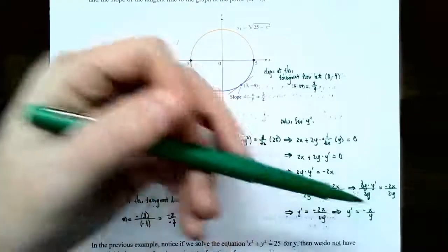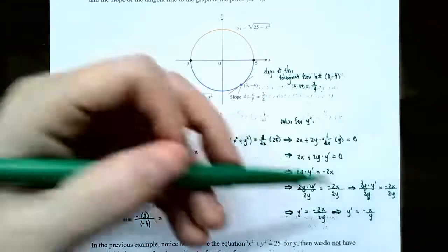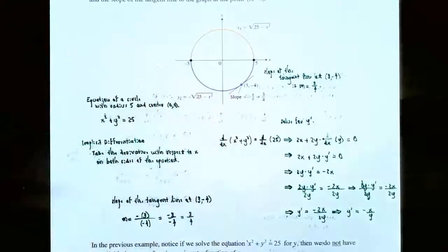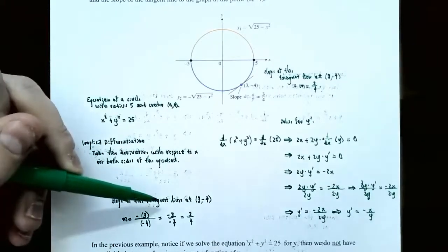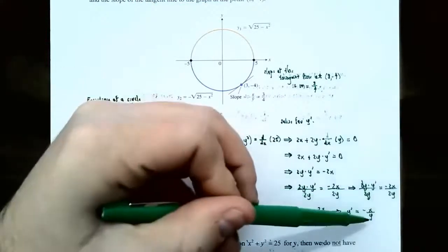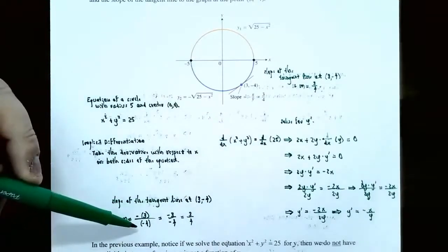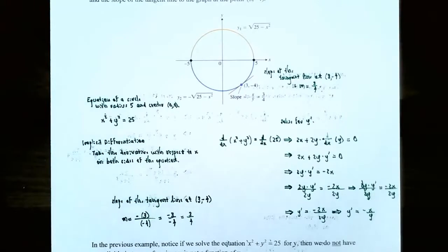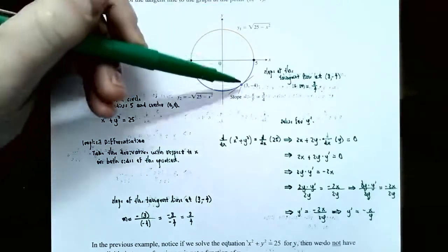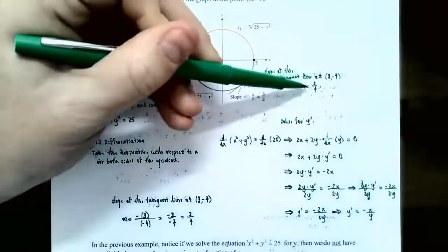Notice that the derivative involves both x and y, which may be a little different than what we've been used to. When we take derivatives of functions, we always had just one variable, so we only needed the x-coordinate to find the slope. This derivative involves both x and y, so we need the entire point. To find the slope at (3, negative 4), replace x with 3 and y with negative 4 in the derivative. The slope is negative 3 divided by negative 4, which simplifies to positive 3 fourths. So at the point (3, negative 4), the tangent line has a slope of 3 fourths.